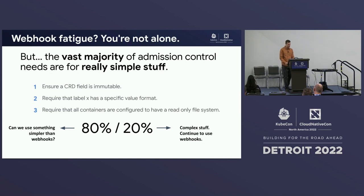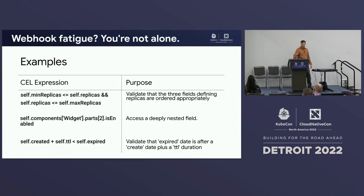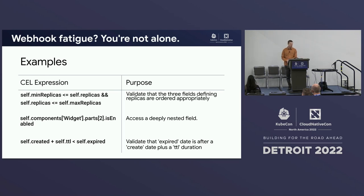I'm going to focus on that today. The tool we're going to look at is called the Common Expression Language. Here are a couple of examples of what that looks like. The one thing I hope everybody notices is that this is a pretty unsurprising syntax — if you've worked in any C-style programming languages, you can probably guess what this code does, and you're probably right.